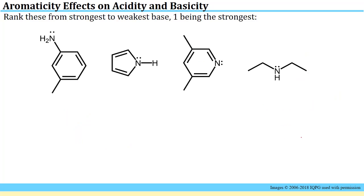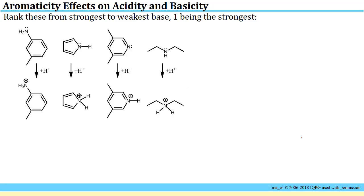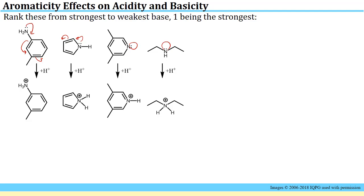Here we are asked to rank four species in terms of basicity, one through four, with one being the strongest. To tackle this, we look at the product formed upon protonation of each species. The most thermodynamically favorable reaction occurs for the strongest base. If the lone pair is already involved in resonance, you can't also donate it to a proton very easily, so those two species will be the two weakest bases.